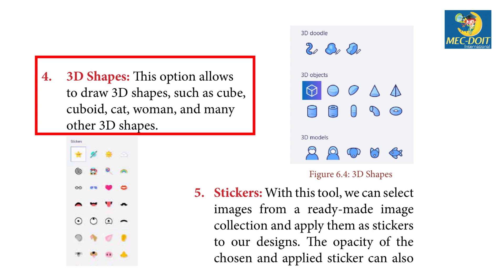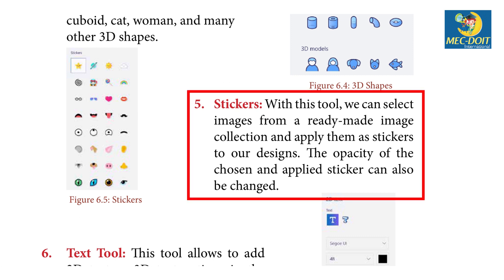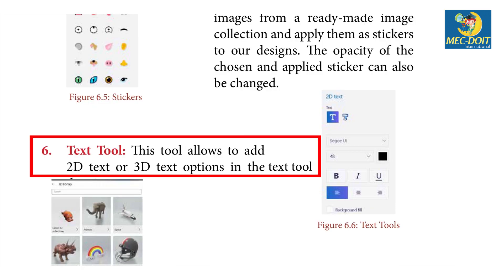4. 3D Shapes — this option allows you to draw 3D shapes such as cube, cuboid, and many other 3D shapes. 5. Stickers — with this tool we can select images from a ready-made images collection and apply them as stickers to our designs. The opacity of the chosen and applied sticker can also be changed.